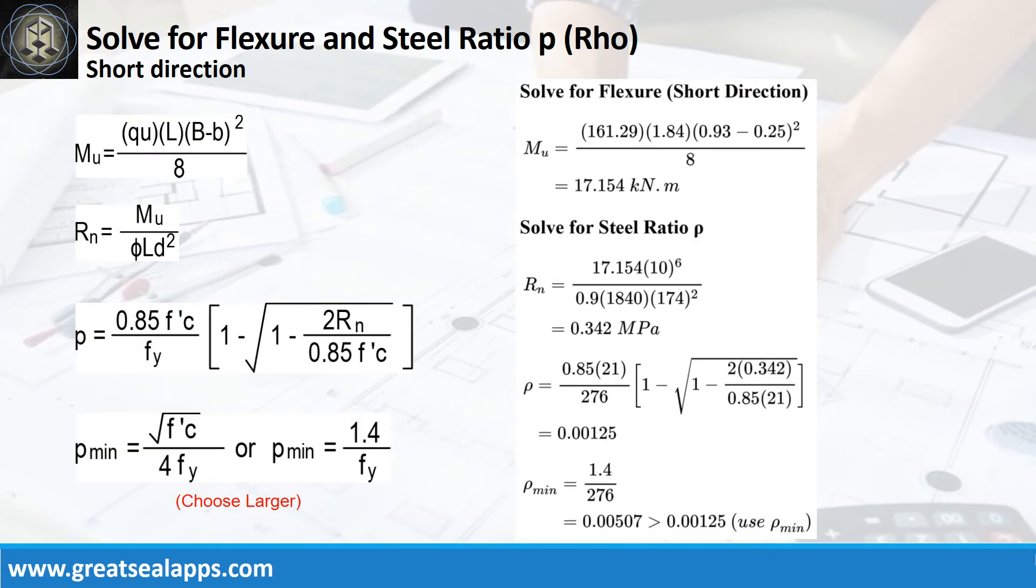At short direction, given ultimate soil pressure equals 161.29 kPa, footing width equals 0.93m, footing length equals 1.84m, and column side equals 250mm, the maximum moment is 17.154 kNm.